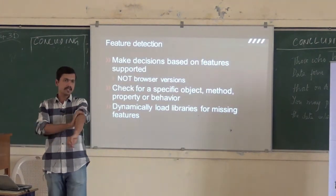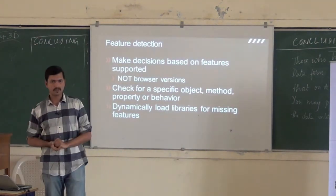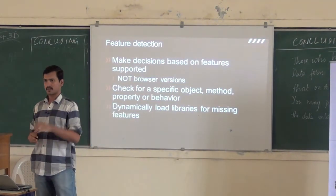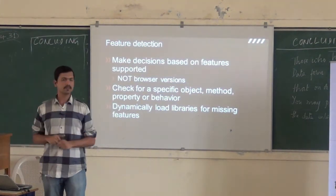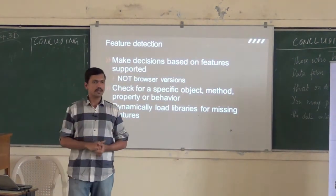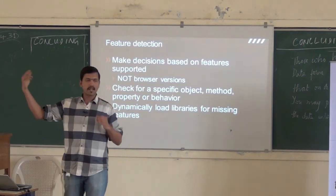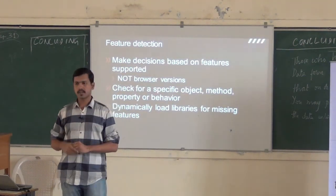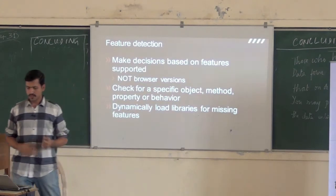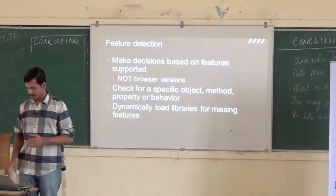Let's say you have a site which needs Canvas support. You can do feature detection to find out if the current environment supports Canvas. If not, maybe you will load a polyfill — maybe something like a Flash-based or a Silverlight-based Canvas implementation. So you get to do some intelligent things with your code when you do feature detection.